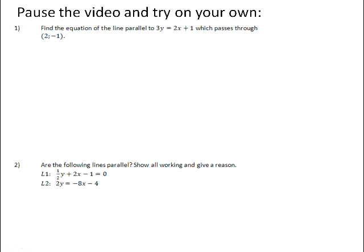Number one, find the equation of the line that is parallel to 3y equals 2x plus 1, which passes through the point (2, -1). With these questions, what is often useful is to separate what your original equation was, or the given equation, and the new equation that you are being asked to find.